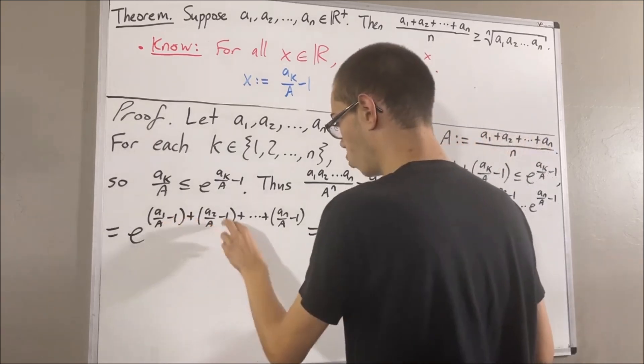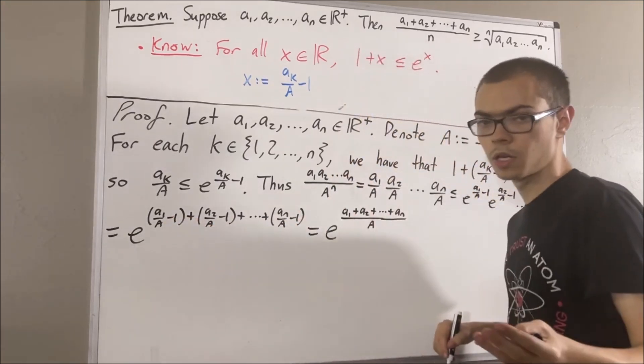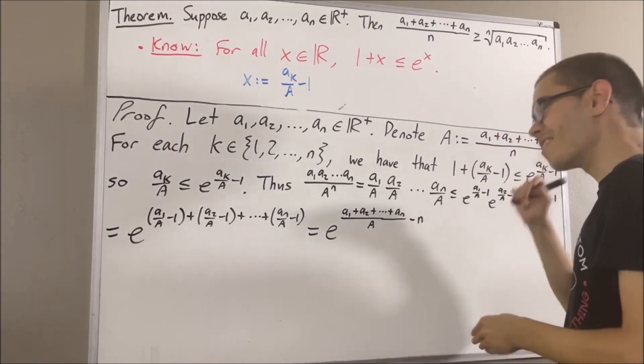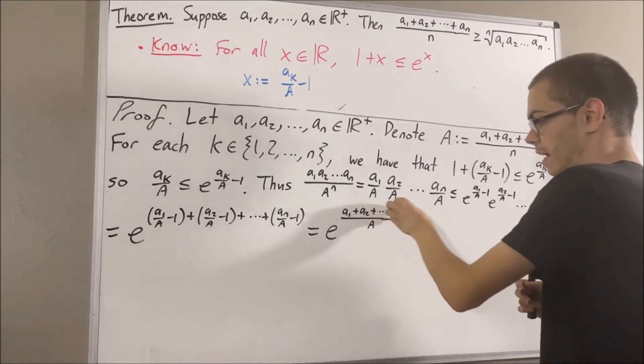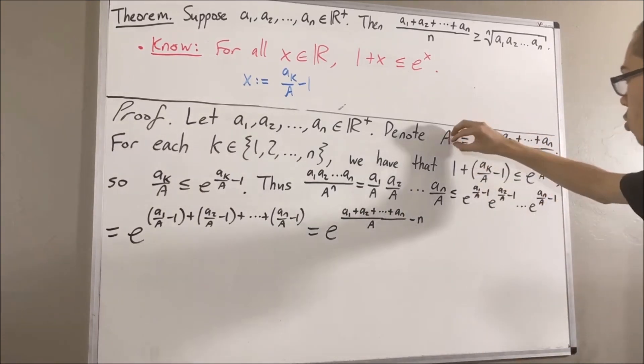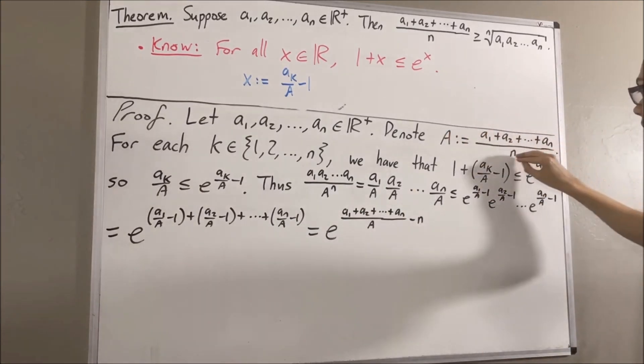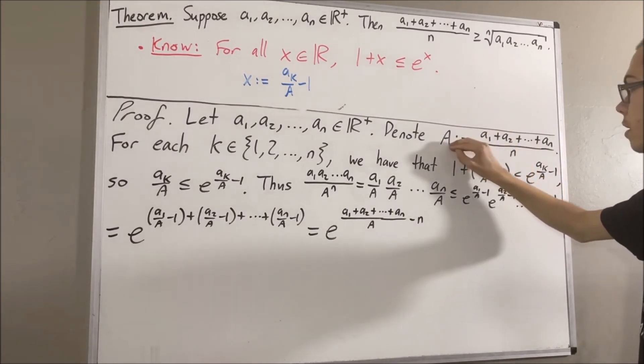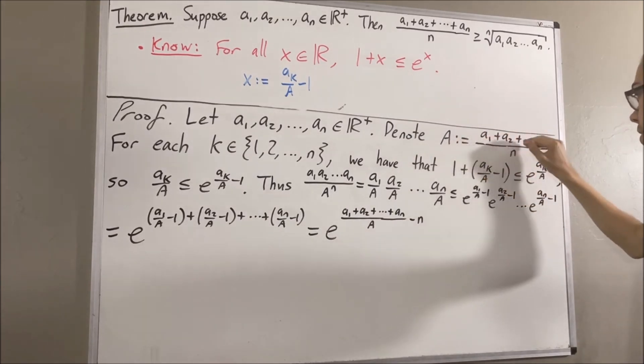And also, we are subtracting 1 n times, which means we're subtracting n. Okay, and then, it turns out, we can simplify this fraction. Because, if we go to this equation, and we multiply n to the other side, we see that n times capital A is equal to a1 plus a2 plus dot dot dot plus an. Therefore, the numerator is equal to n times capital A.